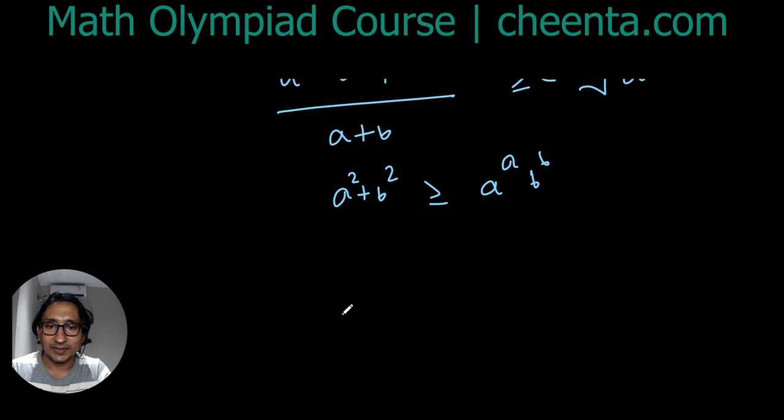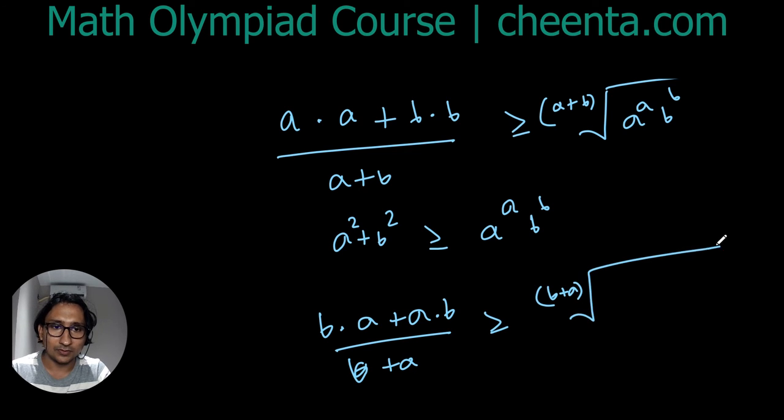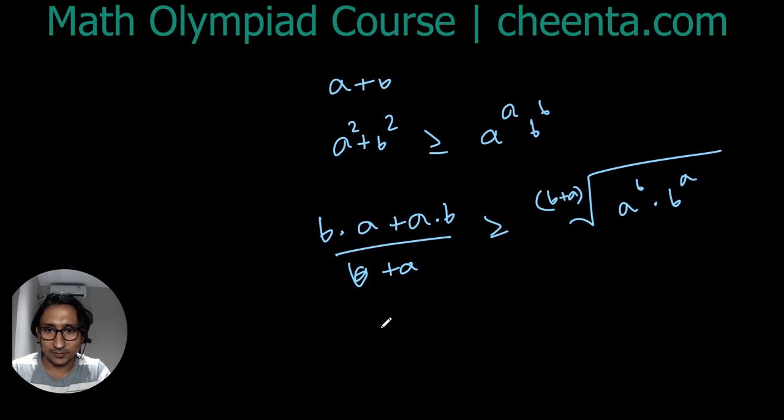Similarly, (b times a + a times b)/(b+a) is greater than or equal to the (b+a)th root of a^b times b^a. Therefore a^b times b^a.